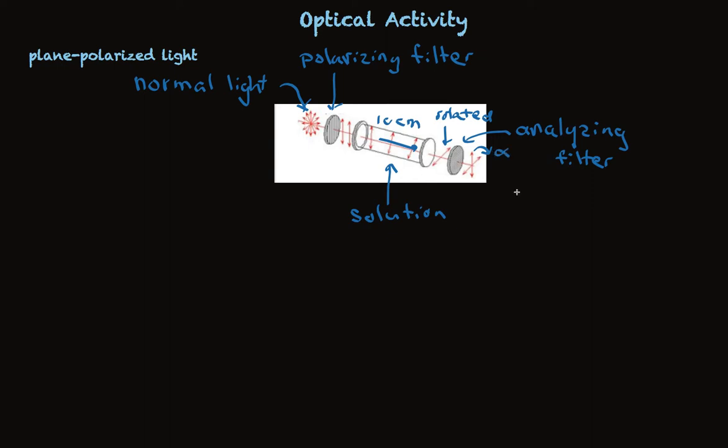That's a value that's called alpha. And when a solution rotates the plane of polarized light, we say it's optically active.